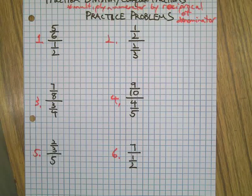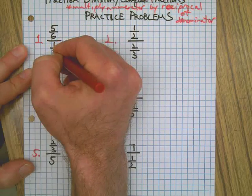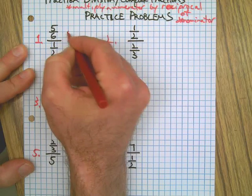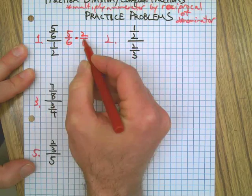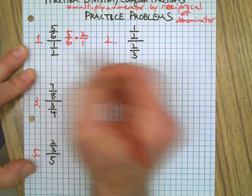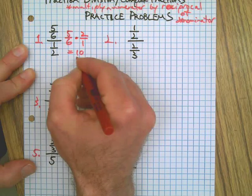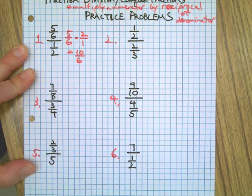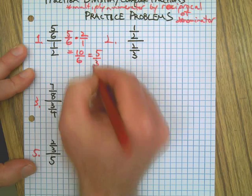Welcome back! Here we go. Number one: we're going to change 5/6 divided by 1/2 to 5/6 times 2/1, because that's the reciprocal of the denominator. 5 times 2 is 10, 6 times 1 is 6. 10/6, which we can reduce to 5/3, or you could write as a mixed number 1 and 2/3. Both are okay.